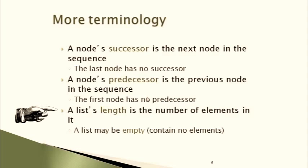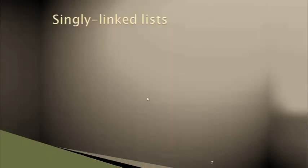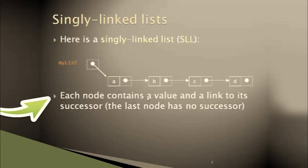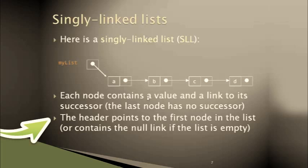Now let's look at the singly linked list. In a singly linked list, each node contains a value and a 'next' pointer pointing towards the next node. Each node contains a value and a link to its successor — therefore it is known as a singly linked list. Your last node points to null, and the header points to the first node, or contains a null link if the list is empty.